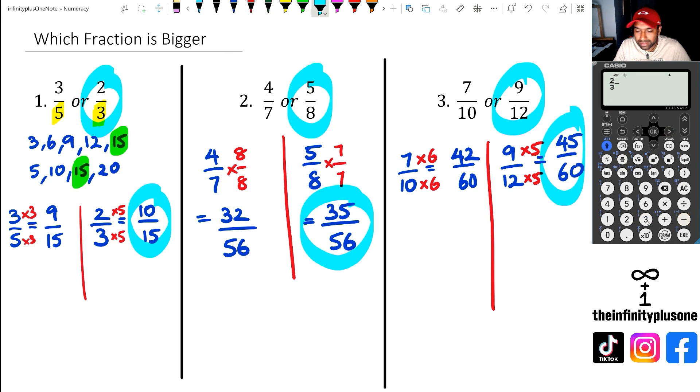and I go two thirds minus three fifths. Now if I get a positive number, then two thirds is bigger. If I get a negative number, then two thirds is smaller. And I'm going to get a positive number here. So it's one over 15. So that's how I know two thirds is bigger. That's just another little quick hack to show you folks how to do it on the calculator as well.